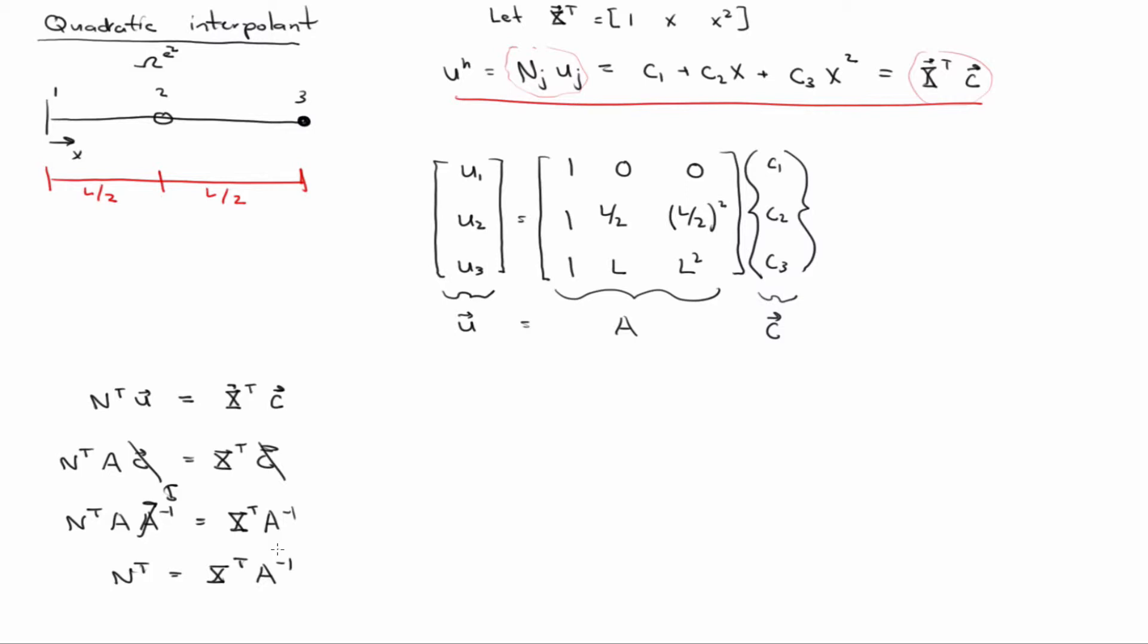So this is a very simple systematic way to determine what the shape functions are for any order polynomial interpolant. Because x is just the polynomial approximation, right? In 1D it's easy, but in 2D it would just come from Pascal's triangle or whatever we talked about. So it's just 1, x, x squared. And then a, if you notice a is just x evaluated at all the nodes.